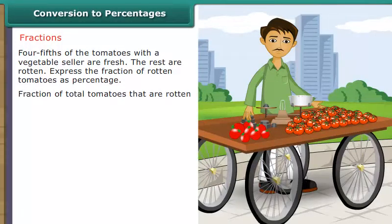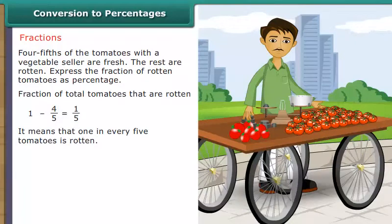Fraction of total tomatoes that are rotten is equal to 1 minus 4 upon 5, which equals 1 upon 5. It means that 1 in every 5 tomatoes is rotten.